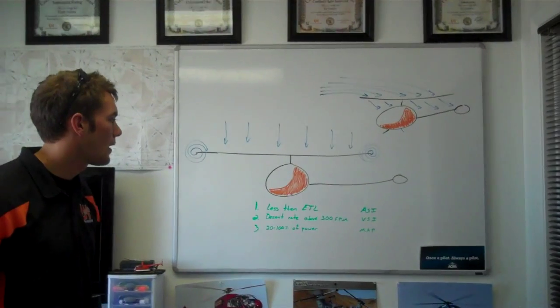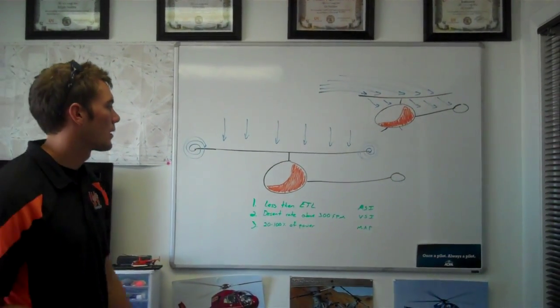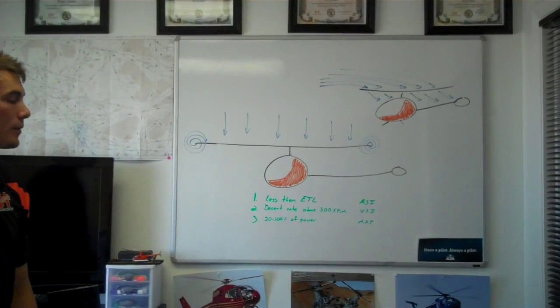The three gauges that you're going to monitor to stay out of Settling with Power in the first place are going to be ASI, VSI, and manifold pressure.